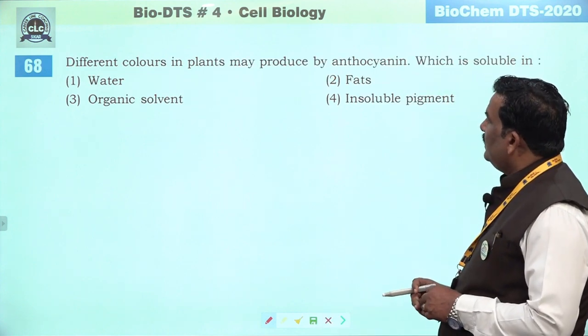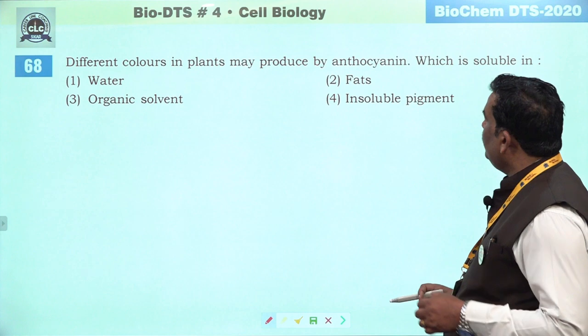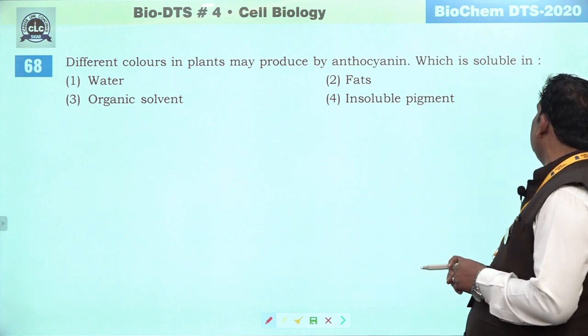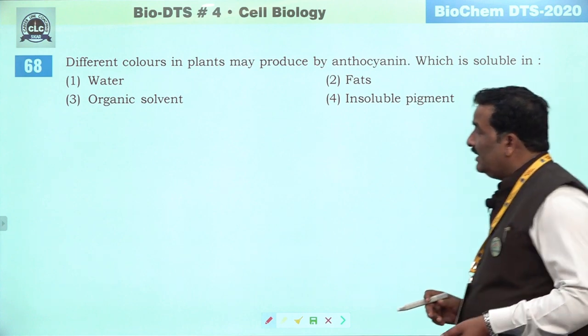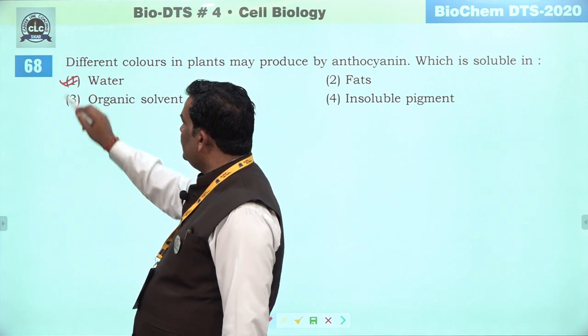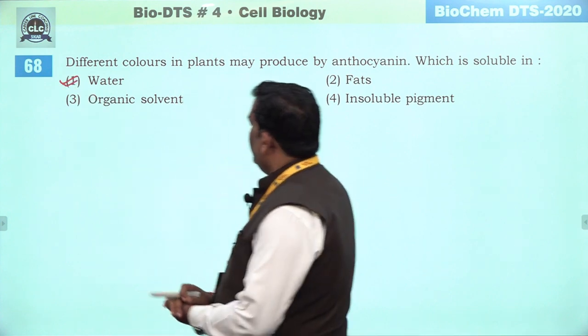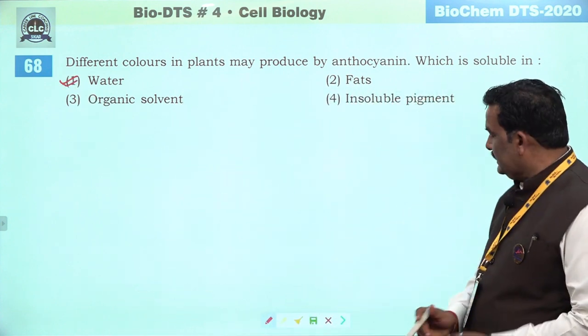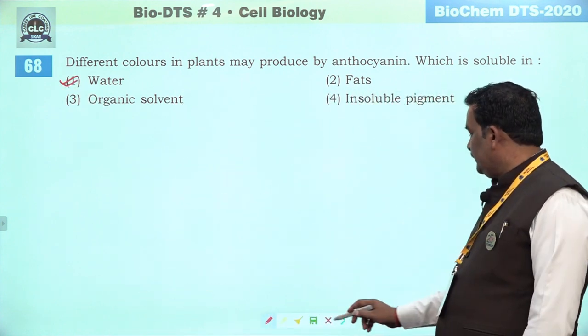Next question: different color in plant may be produced by anthocyanin, which is soluble in water. First is the right answer.